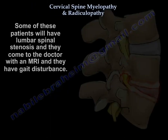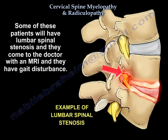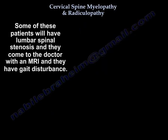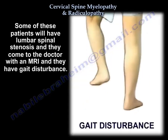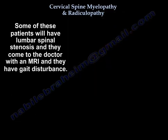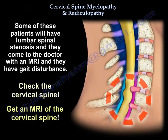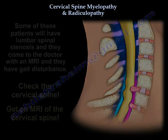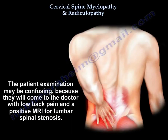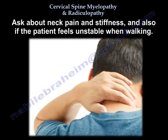Some of these patients will have lumbar spinal stenosis and they come to you with an MRI but they have gait disturbance. Check the C-spine — get an MRI of the C-spine. The exam may be confusing because they will come with low back pain and a positive MRI for lumbar stenosis.